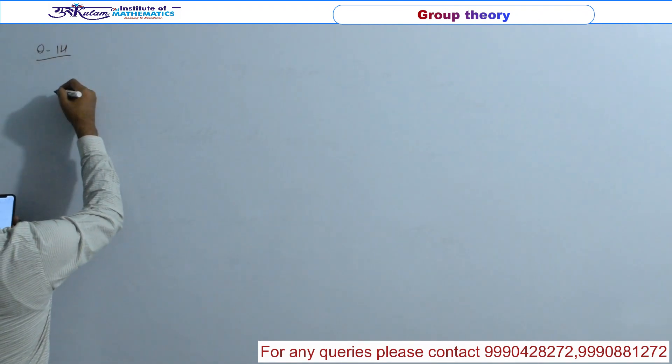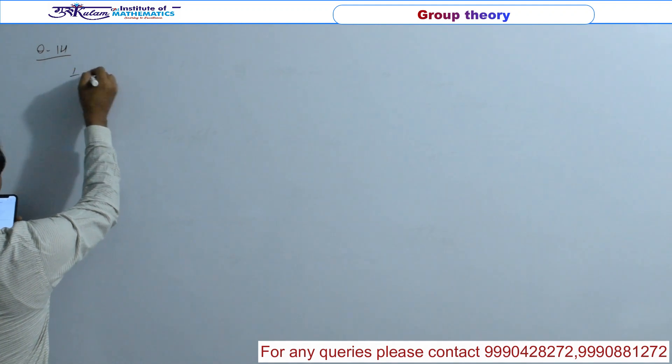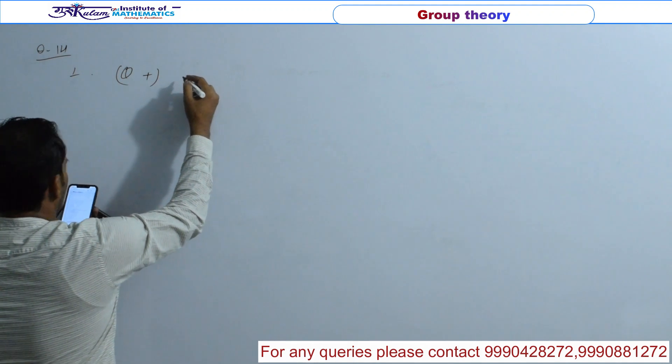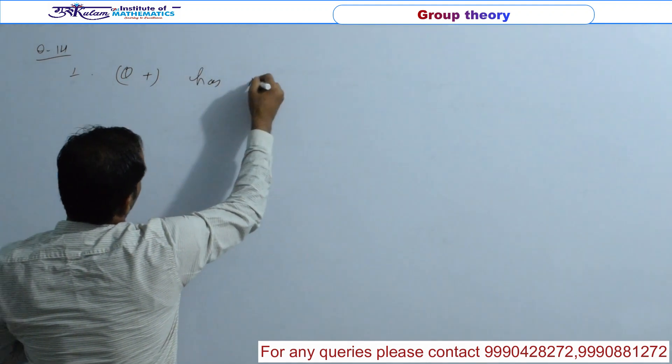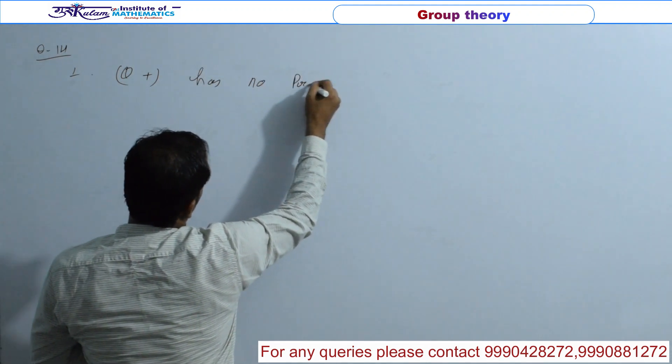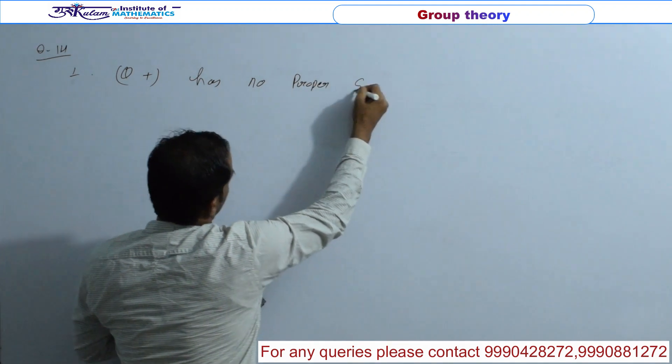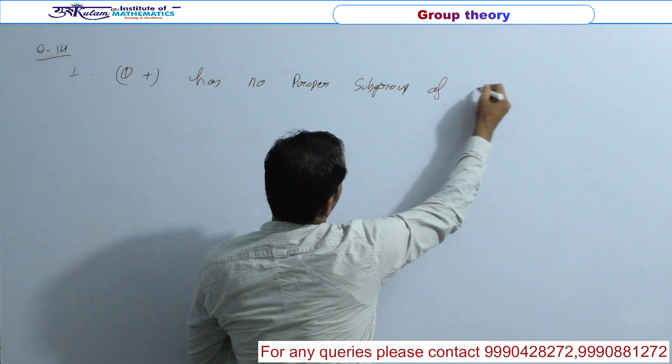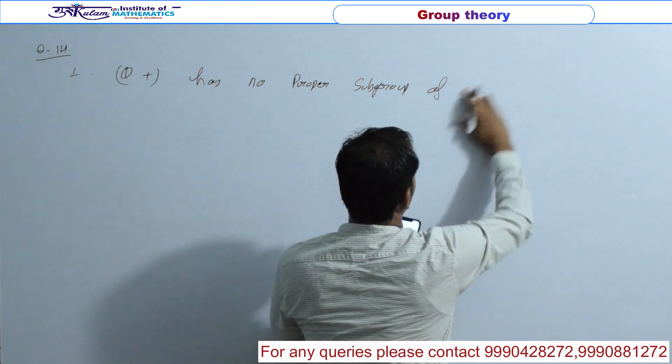Question में आपको दो statement given है. Consider the following statement. First statement है, the group Q plus has no proper subgroup of finite index.